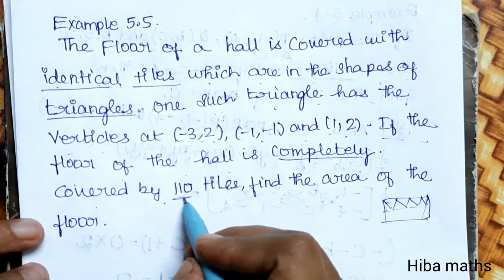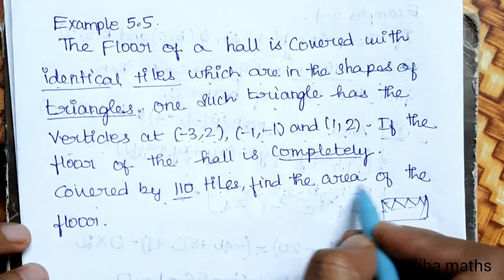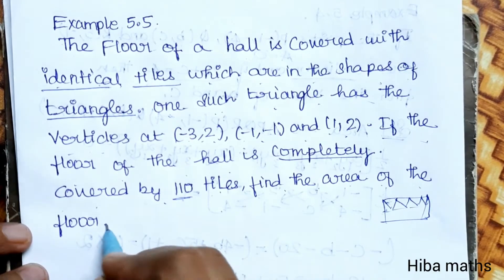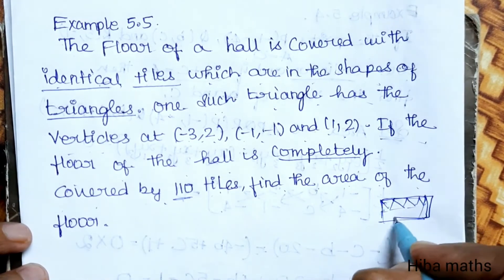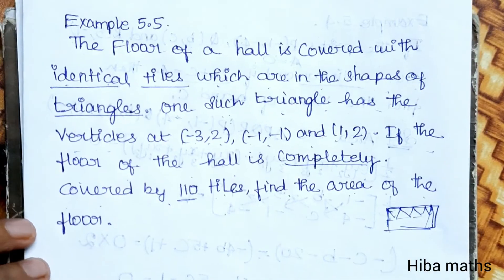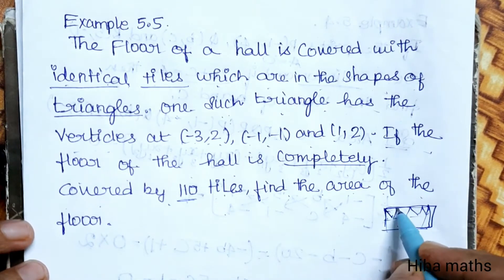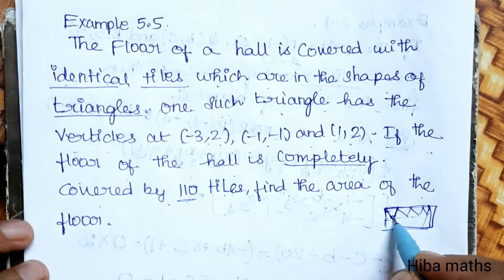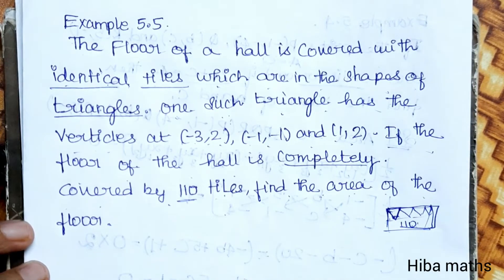The floor of the hall is completely covered by 110 tiles. Find the area of the floor. The floor is in the shape of the tiles, so it's very easy — find the area of one triangle tile first.